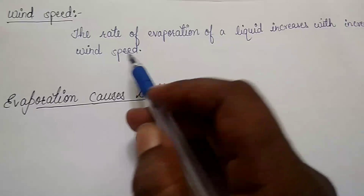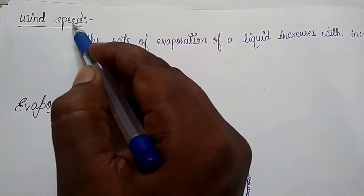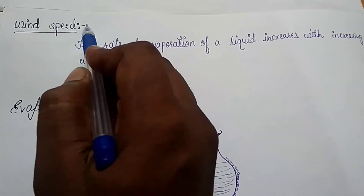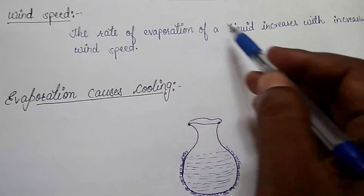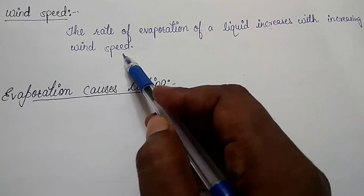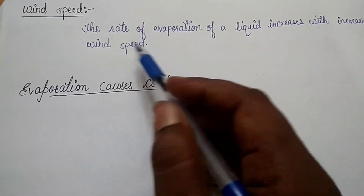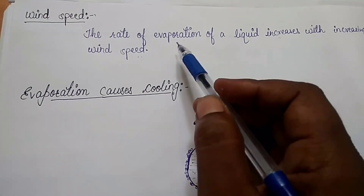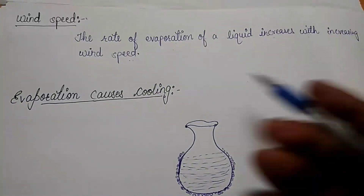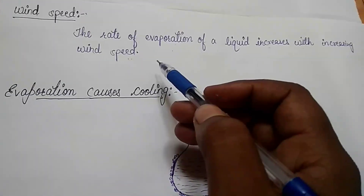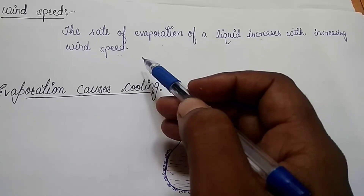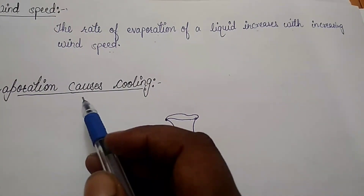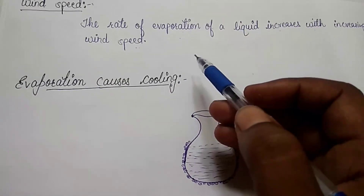Fourth factor — wind speed. The rate of evaporation of a liquid increases with increasing wind speed. When the speed of wind increases, the particles of water vapor move away with the wind, which decreases the amount of water vapor in the surrounding area and increases the rate of evaporation of water. For example, washed wet clothes dry more quickly on a windy day because evaporation is faster due to high wind speed.